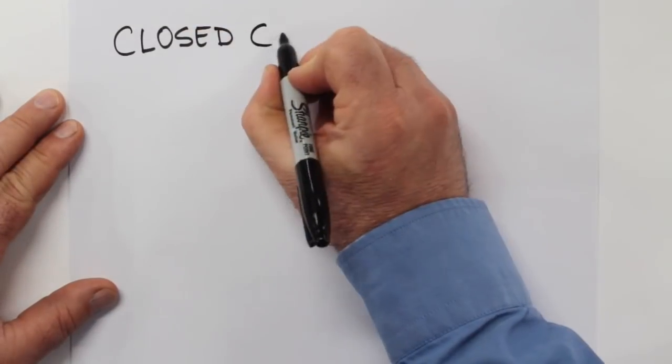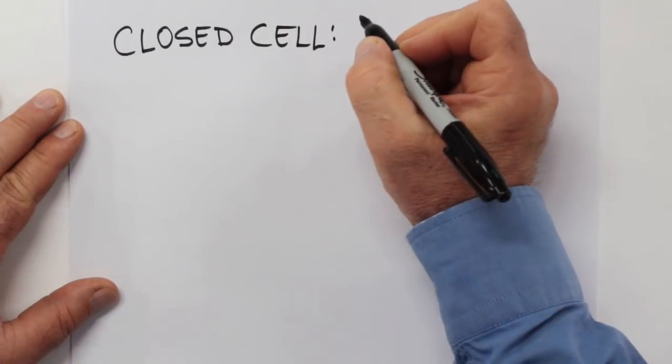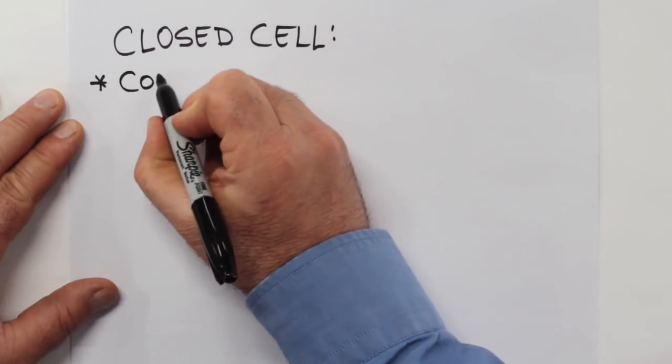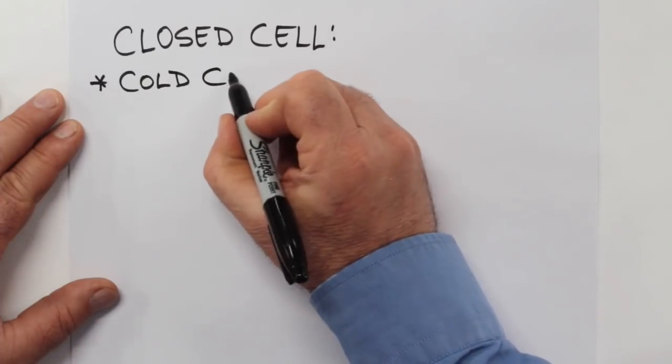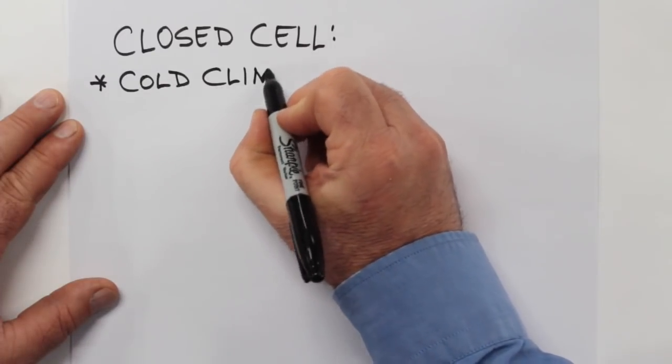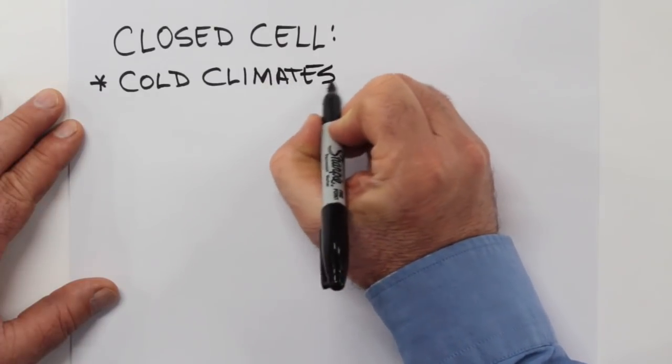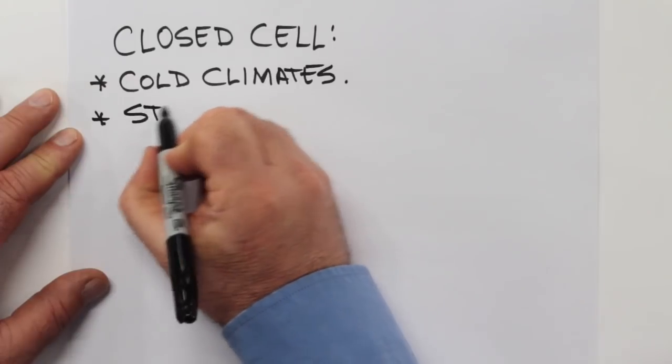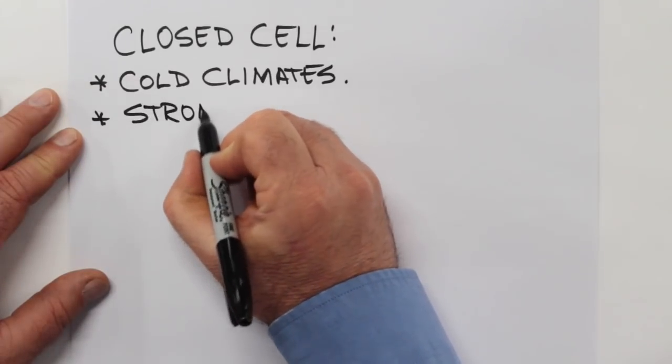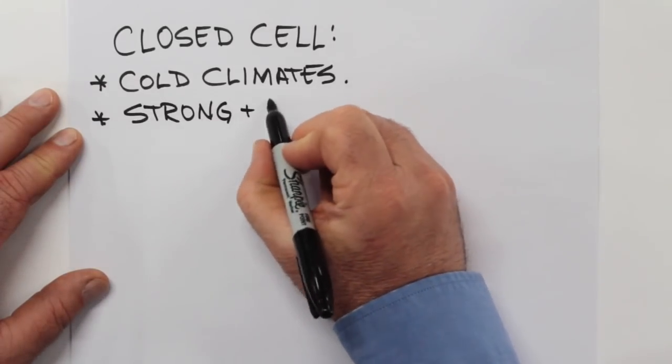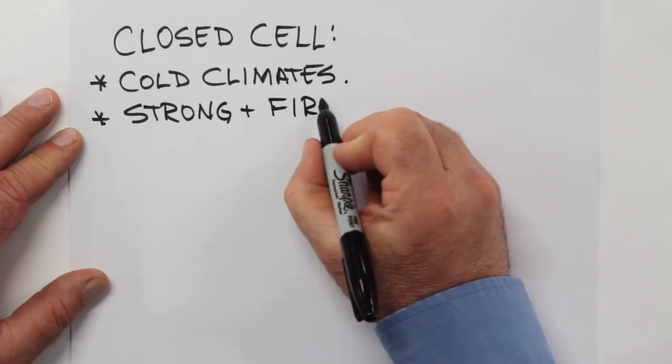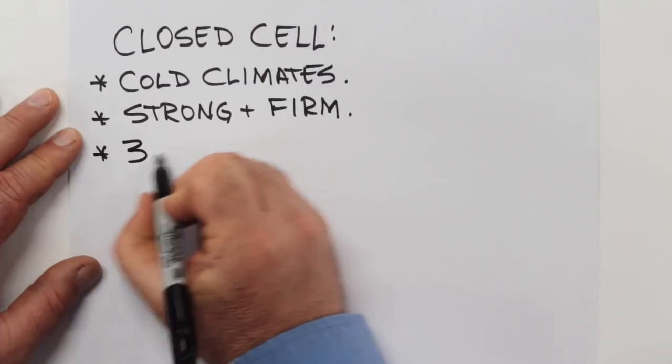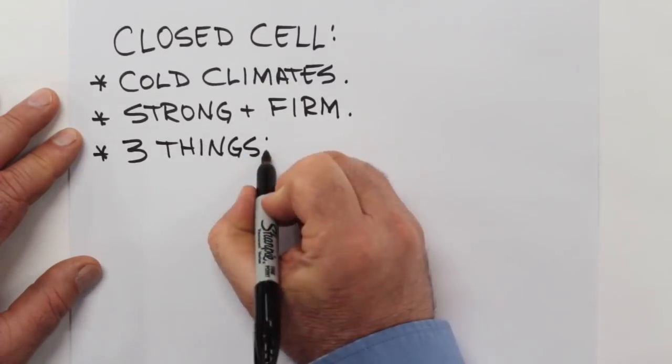So to recap, closed cell spray foam has specific qualities that make it work well in certain situations. It's most often the foam of choice for cold climates, especially where that cold is extreme and the heating expectations are high. Second of all, it's strong and firm, so much so that it can actually increase the strength of a structure.